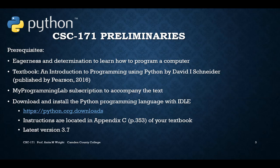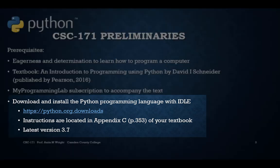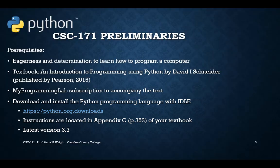You can download and install the software by going to www.python.org. The instructions for managing this are located in Appendix C of your textbook, and the version you should be downloading for a Windows machine is version 3.7. If you are using a Mac, it already comes with Python, but be sure that you are using Python 3, not Python 2.